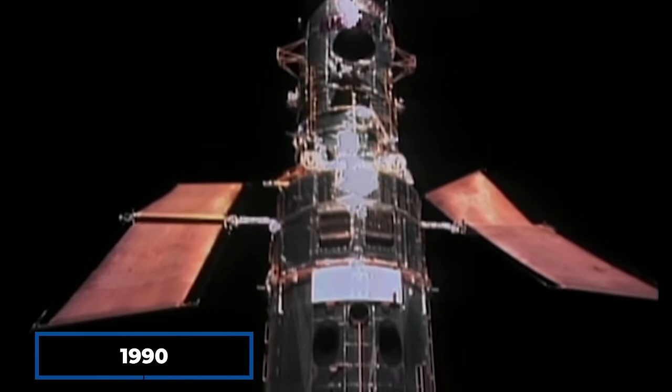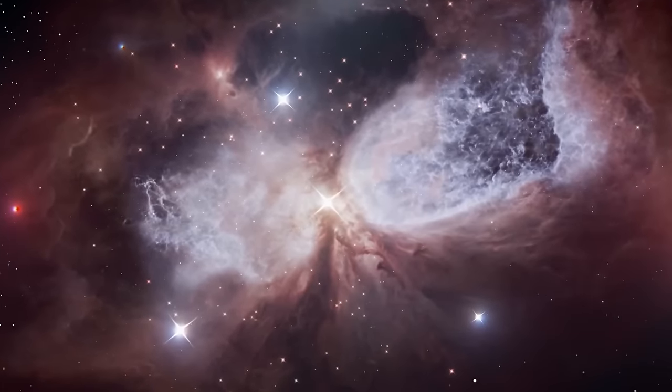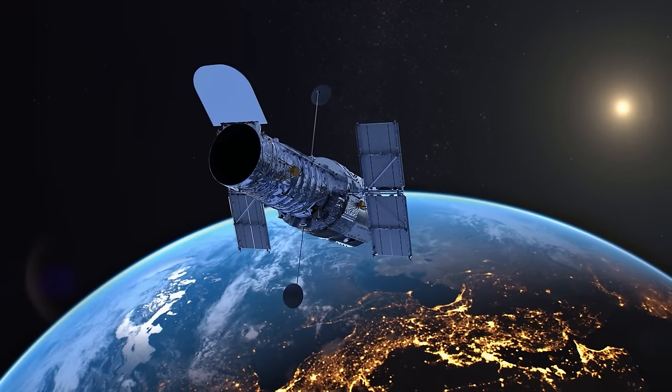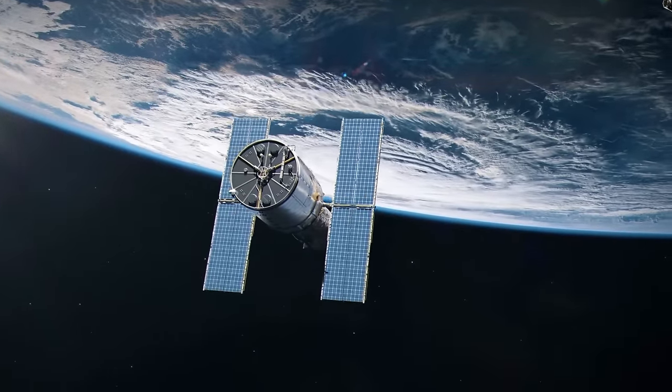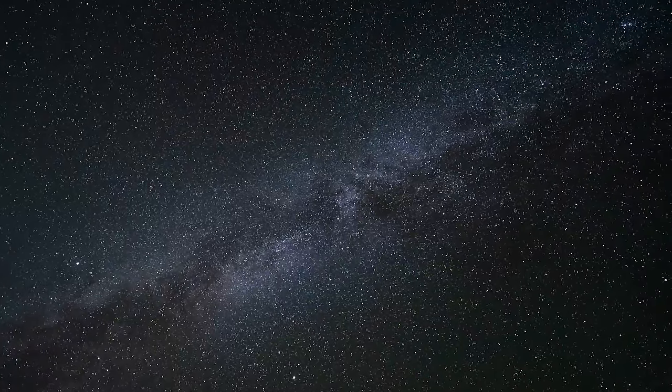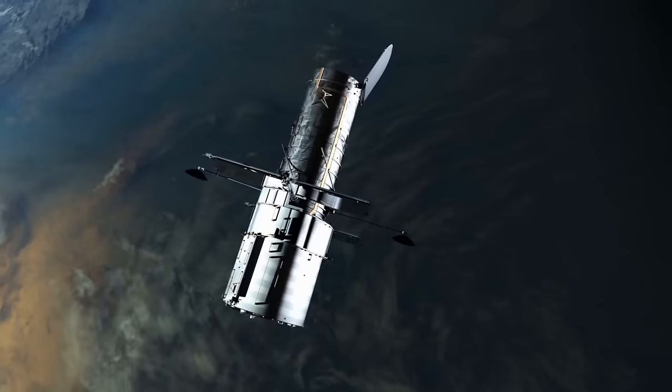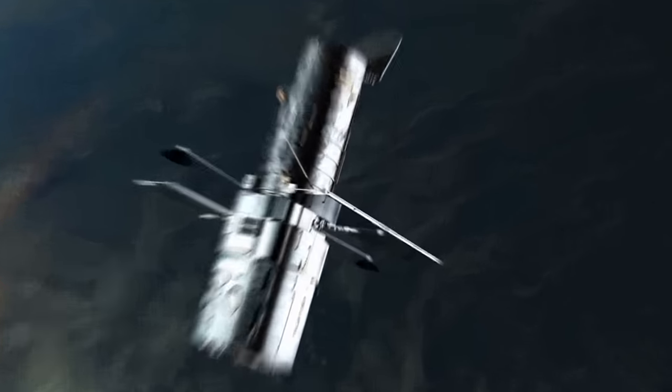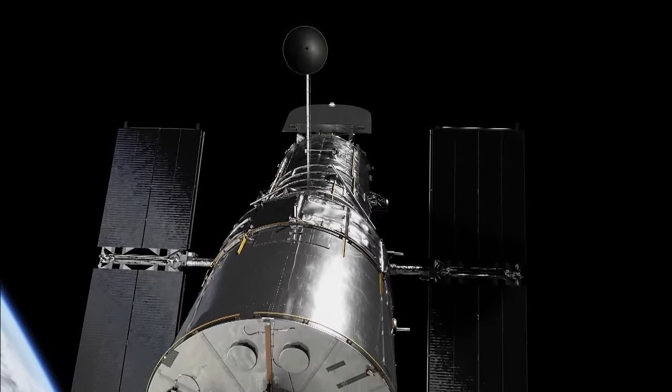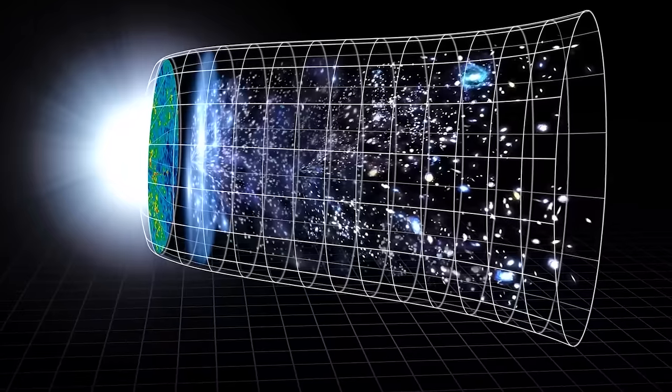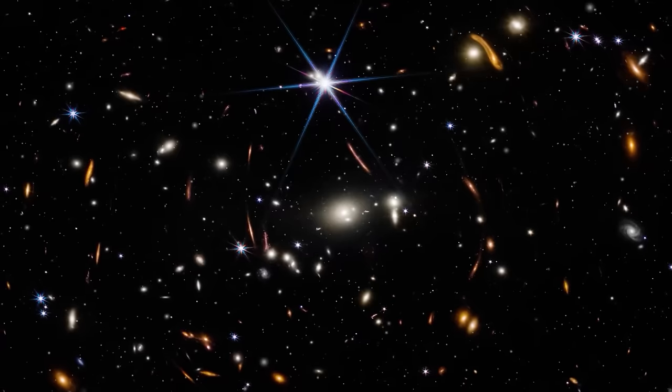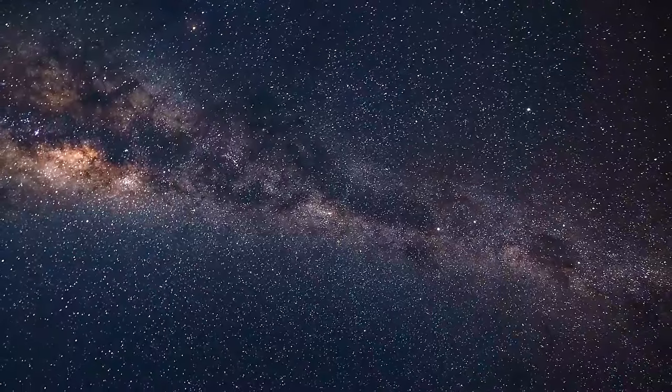Since Hubble started its space journey in 1990, it's been like a window to the wonders of the universe. But it does so much more than just take pretty space pictures. It comes with a whole set of tools that let it catch all different kinds of light from the kind we can see to the kind that's invisible to us. This makes Hubble an incredibly important tool for astronomers, giving them a peek into the farthest corners of space. This teamwork between American and European scientists puts Hubble in a special spot high above the Earth where it can see things without the blurring effects of our planet's atmosphere. This clear view lets Hubble look at everything from tiny space rocks bumping into each other in our own backyard to ancient galaxies forming stars when the universe was just a baby. Thanks to Hubble, we've learned a ton about how galaxies, stars and planets come to be and how they change over time.